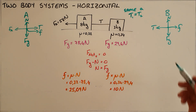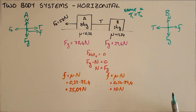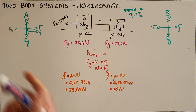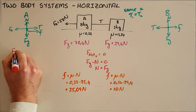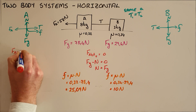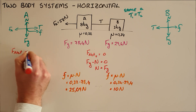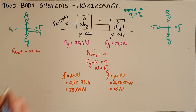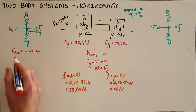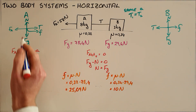Once you have a free body diagram for each of these objects, we can write a Newton's second law expression for each object. Newton's second law applies to each object individually and tells us that the net force acting on that object is equal to the mass of that object multiplied by its acceleration.